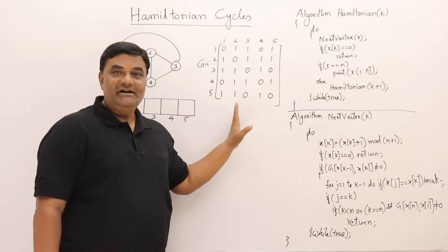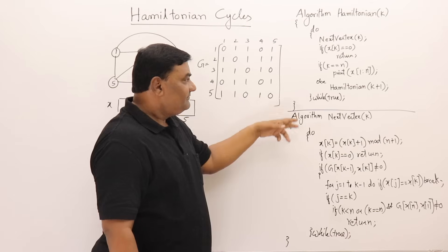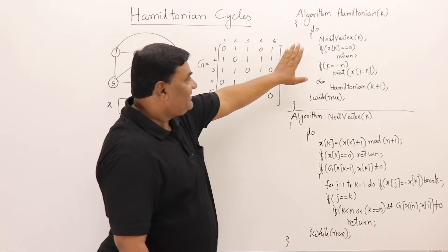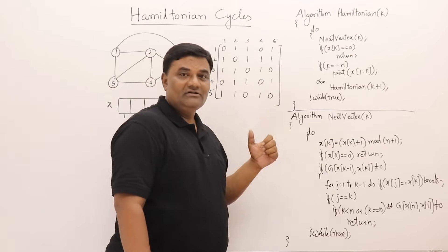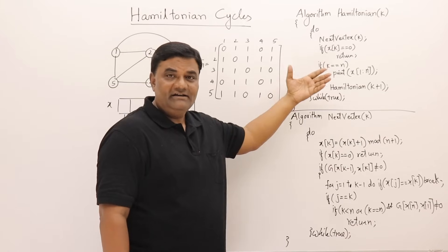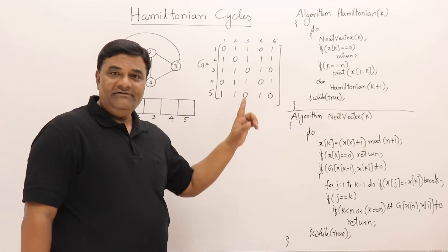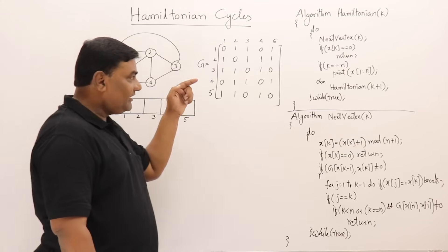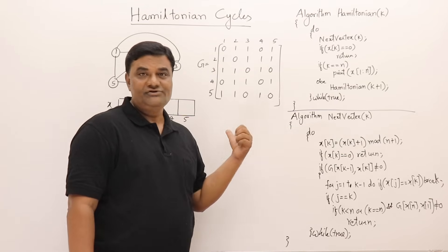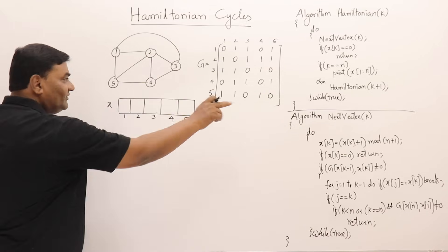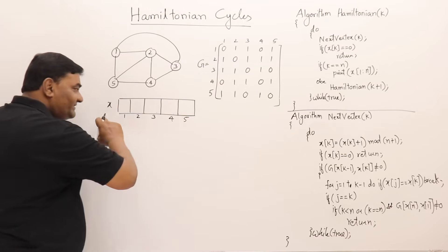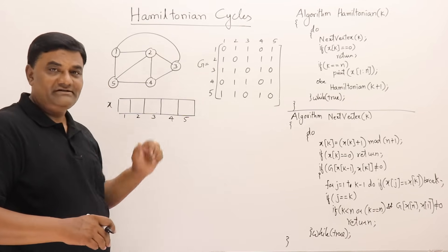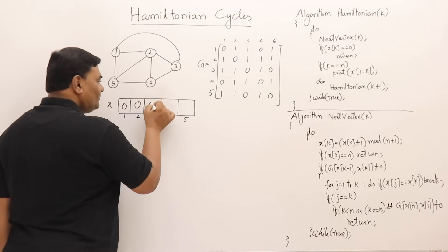Here is a graph and its adjacency matrix. The algorithm has two functions — one is the starting point, and the other performs backtracking to find the next vertex. The algorithm uses the adjacency matrix and an array for finding the cycle. When all values are filled and the cycle is found, it will display the result. Initially all array values are zero.